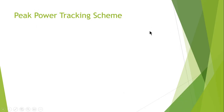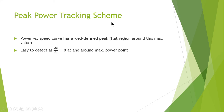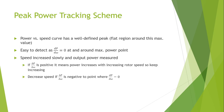The next scheme is the peak power tracking scheme. The peak power versus speed curve has a well-defined peak with a flat region around the maximum value, which is easily detectable using the first derivative of power with respect to speed equals zero at the maximum power point. The rotor speed increases slowly and the output power is measured.